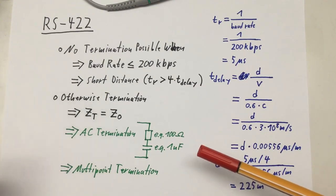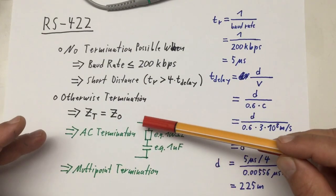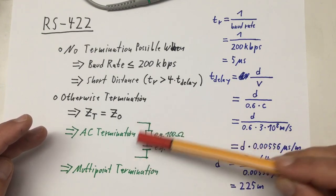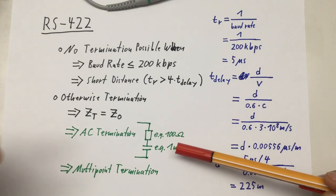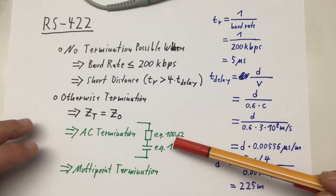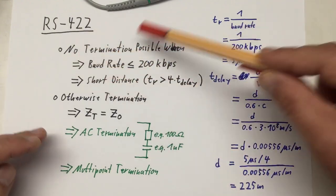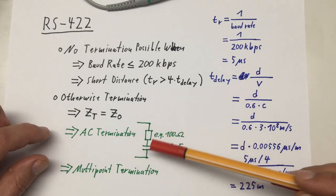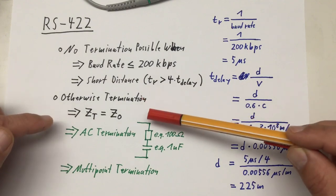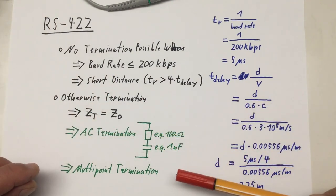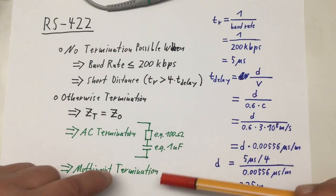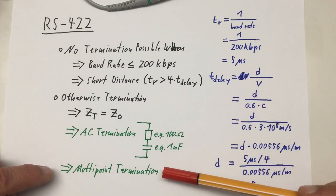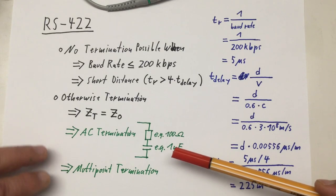There are two more termination techniques used with RS-422 which I will mention but not go into the details. First, there's AC termination. Instead of just using a termination resistor at the end of your transmission line, you use an RC element. The advantage is you put less strain on your line driver transmitter compared to having no termination at all, but signal quality is not as good as with classical termination. Second, there is multi-point termination where you put a termination on several points of your transmission line. Big drawback: a lot of load on your line driver. Advantage: in some configurations that will yield you very good signal quality.